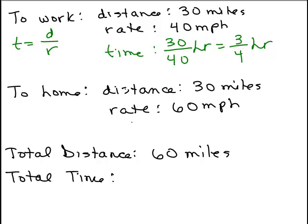What about going home? Same formula, right? Distance over rate. The time it takes to get home is 30 sixtieths of an hour or half an hour.